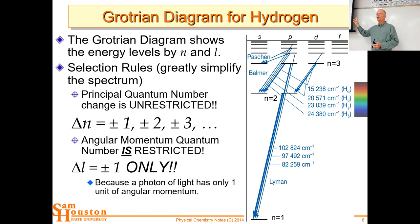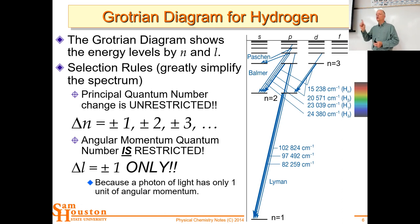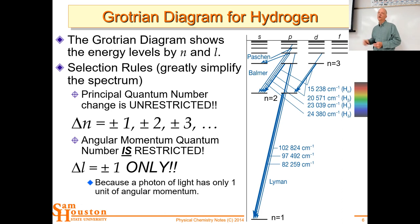If you could do Raman spectroscopy on atoms, the selection rules for the L quantum number would be plus or minus two and zero. You could have the incident photon and scattered photon cancel each other out in angular momentum, so you could jump within the S or P or D, but if you're changing the angular momentum quantum number you'd have to jump by two — from S to D or D to S, or P to F or F to P. Most of the time Raman is used in vibrational spectroscopy, so we don't talk much about Raman in atomic spectroscopy, but there's no reason why it couldn't happen.